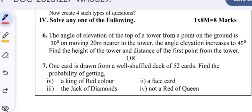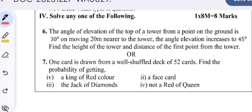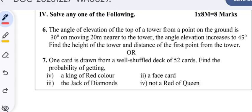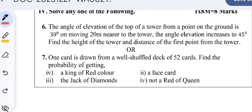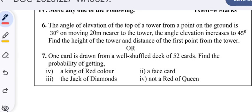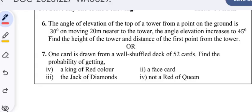Solve any one of the following. This is given for 8 marks. A problem from applications of trigonometry is given: The angle of elevation of the top of a tower from a point on the ground is 30°. On moving 20m nearer to the tower, the angle of elevation increases to 45°. Find the height of the tower and the distance of the first point from the tower.